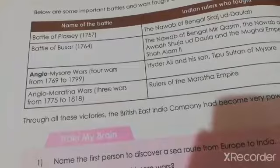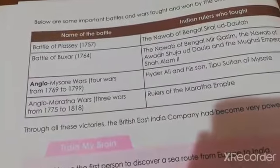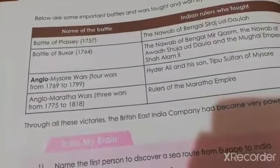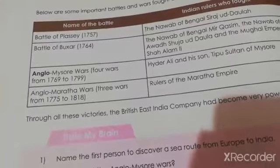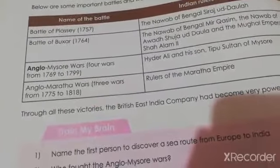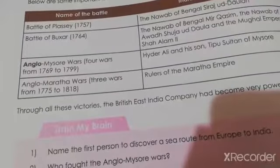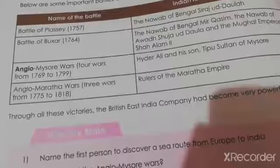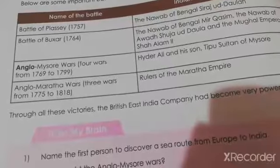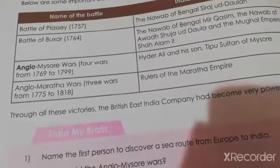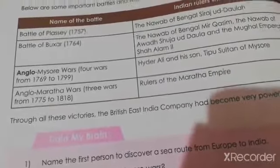The third is the Anglo-Mysore War — four wars fought between 1769 to 1799 between the British and Hyder Ali and his son Tipu Sultan of Mysore. The fourth is the Anglo-Maratha War — three wars fought from 1775 to 1818 between the British and the rulers of the Maratha Empire.